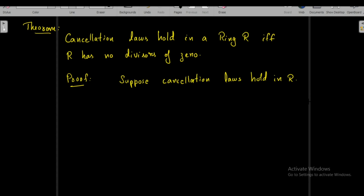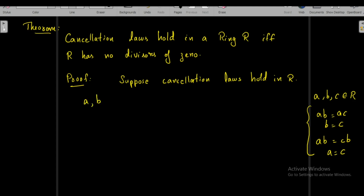First, suppose cancellation laws hold in R. That means if A, B, C belong to R and AB = AC, then by the left cancellation law B = C; and if AB = CB, then by the right cancellation law A = C. We now use these two properties to show that R has no divisors of zero. We take two elements A, B in R and suppose that A times B = 0. If A ≠ 0 and B ≠ 0, then A and B are divisors of zero.